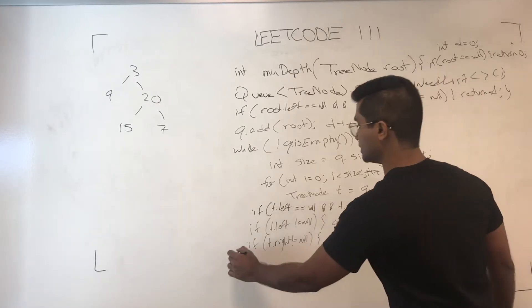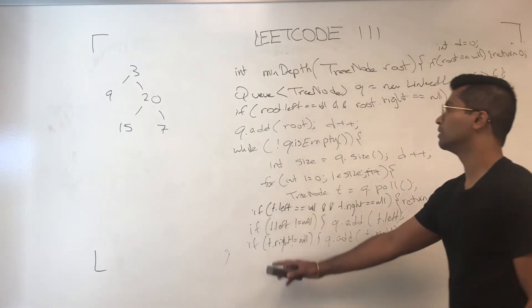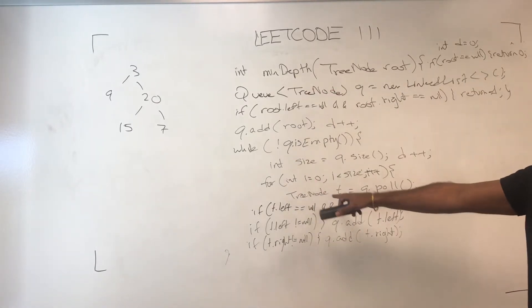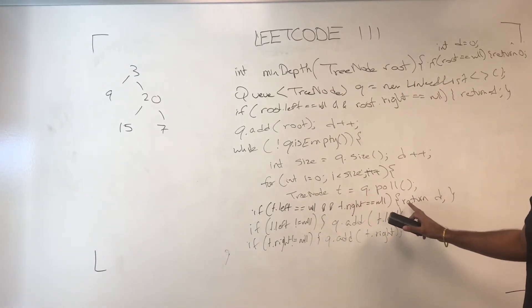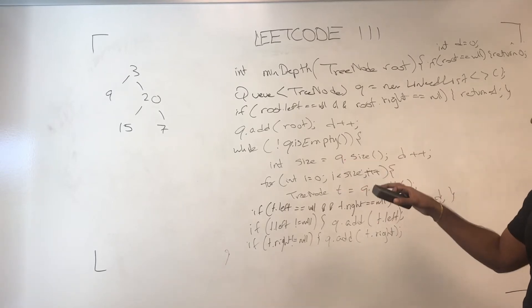Now let's see what's happening. So 3 gets popped out, it's not null right, and then it adds 9 and 20.